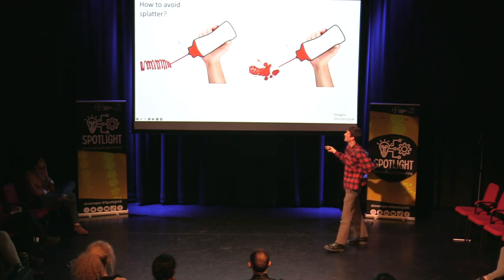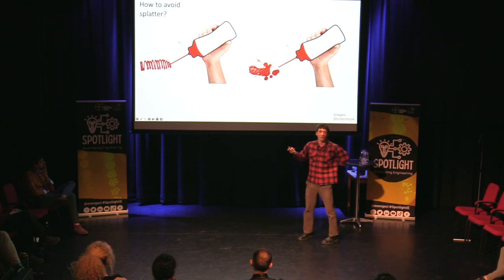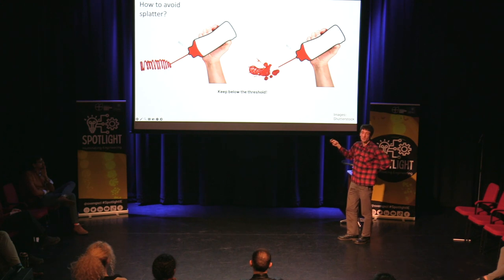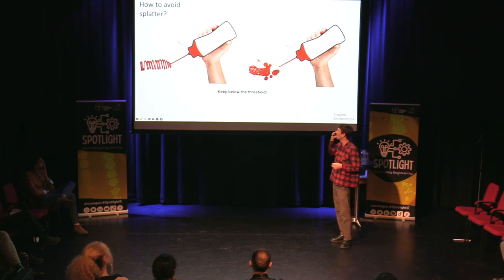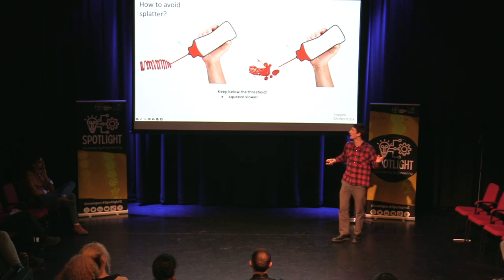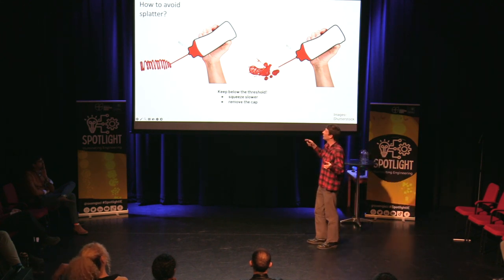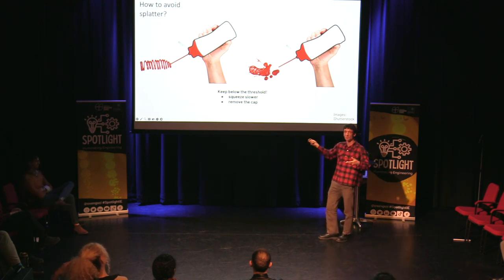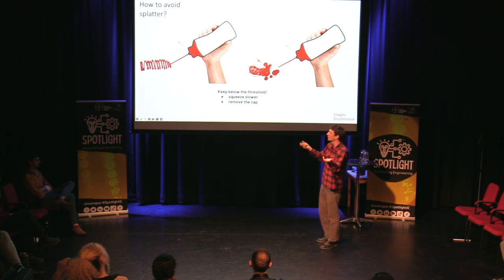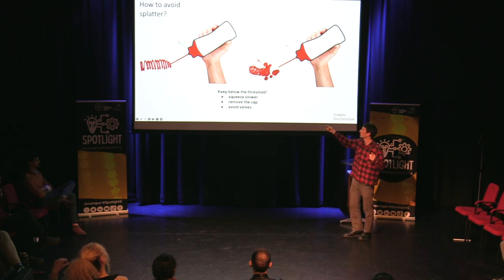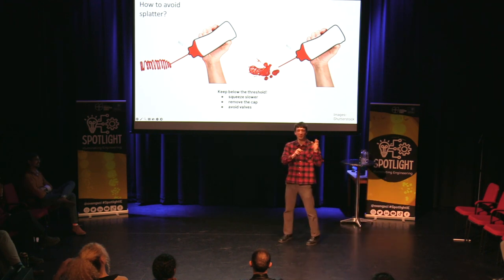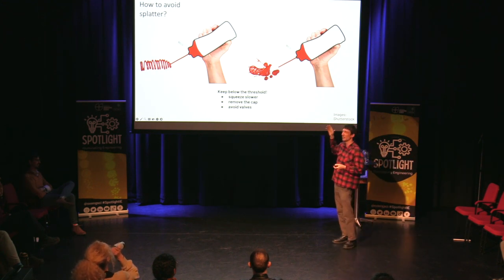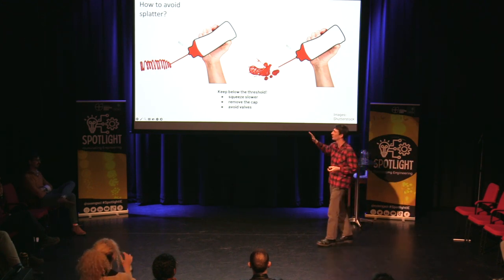So back to the engineering problem: how do we avoid splatter? The answer is to stay below the threshold. The threshold depends on a lot of factors, so it has lots of practical advice. You can squeeze slower — that should help. Remove the cap: a narrower nozzle means there's more resistance, which tends to tip you over the threshold. Take the cap off, larger spout, squeeze through — perfect. Avoid valves — this is a good one. Those rubber valves on the end of some caps are great for lots of other reasons, but for splatter, they make you pre-compressed before anything comes out, which is just asking for trouble.